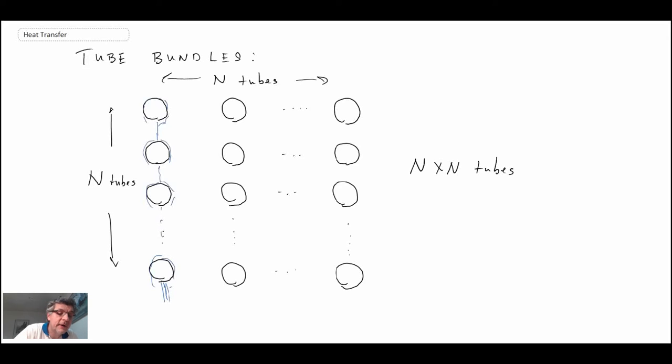Consequently, the convective heat transfer coefficient for a single tube can be corrected for a vertical tier, as we might have in this particular example here. So this would be a vertical tier. And the way that we correct for the convective heat transfer coefficient...